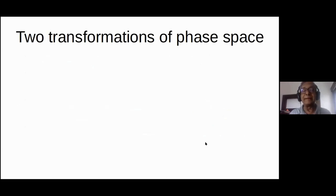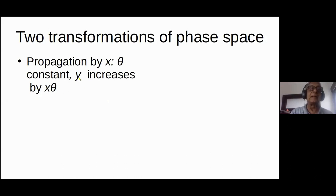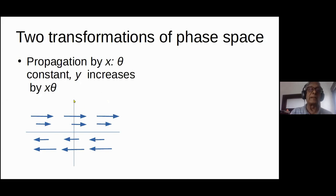The basic idea is that we are going to think of any object — whether a galaxy or a lens — as transforming the phase space. We are not going to solve any complicated differential equations. First, let's just look at propagation through a distance x: theta remains the same (rectilinear propagation) and y increases by x times theta. The transformation looks like a shearing transformation — if you have a square, it becomes a parallelogram — and please note that the area will remain the same.